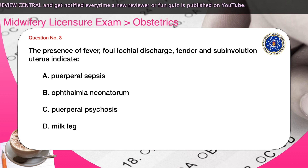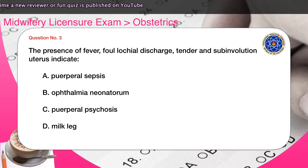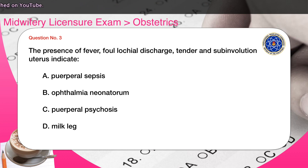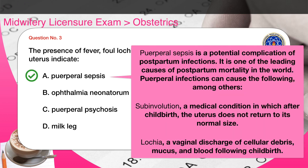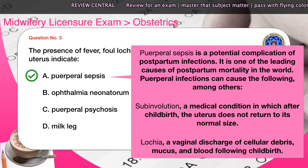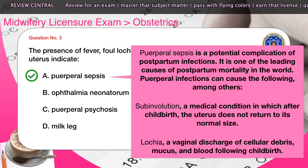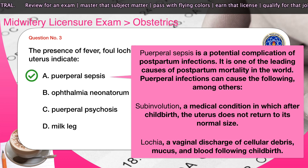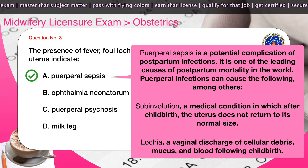Question number three: The presence of fever, foul lochial discharge, tender and subinvoluted uterus indicate — A) puerperal sepsis, B) ophthalmia neonatorum, C) puerperal psychosis, D) milk leg. The correct answer is A. Puerperal sepsis is a potential complication of postpartum infections and one of the leading causes of postpartum mortality in the world. Puerperal infections can cause subinvolution, a condition in which after childbirth the uterus does not return to its normal size, and abnormal lochia, a vaginal discharge of cellular debris, mucus, and blood following childbirth.